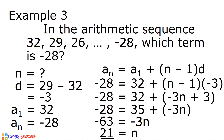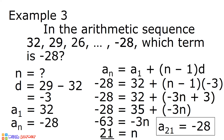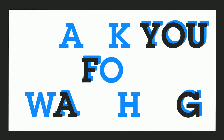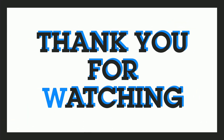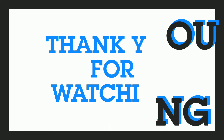And the value of n is equal to 21. It means that negative 28 is the 21st term of the arithmetic sequence 32, 29, 26, up to negative 28. That's all for this video. Thank you for watching.